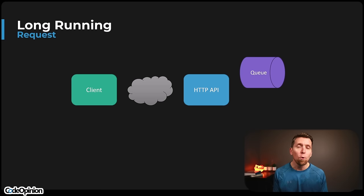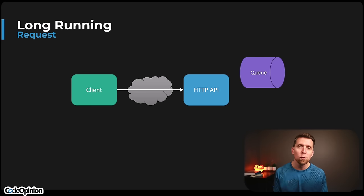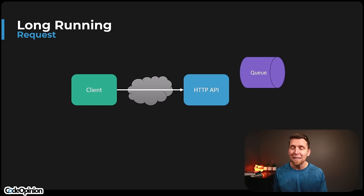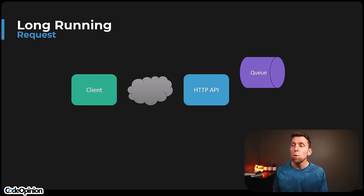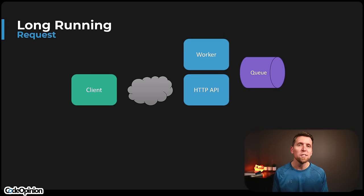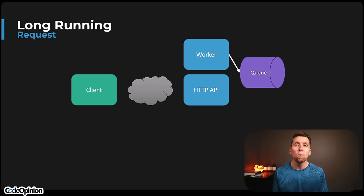One solution is to perform that work asynchronously, so that when our client makes the request to our HTTP API, we're not generating that transcript or doing that work immediately. Rather, we're just going to place a message on a queue, then we can return back to our client very quickly. Separately, we could have a separate process or thread pick up that message from our queue.